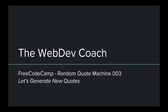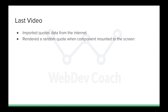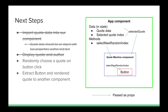Hello and welcome back to the Web Dev Coach, where my goal is to teach you web development. To recap the last video, we imported quotes data from the internet from a gist and were able to render a random quote from the array onto the screen whenever the app component mounted. In this video, my goal is to randomly choose a new quote when we click the button.